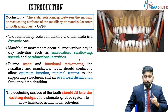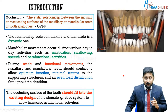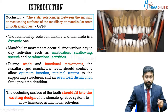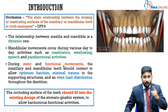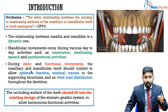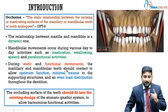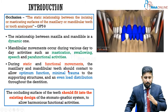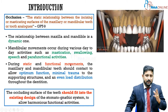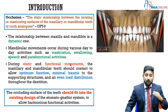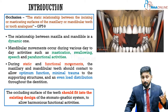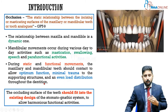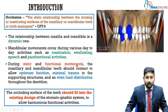The way the upper and lower teeth meet is very important because the teeth play a role in the entire pathway the mandible takes. During static as well as functional movements, we want maxillary and mandibular teeth to contact in a way that allows optimum function, minimal trauma to the supporting structures — the periodontium, muscles, and TMJ — and an even load distribution throughout the dentition.